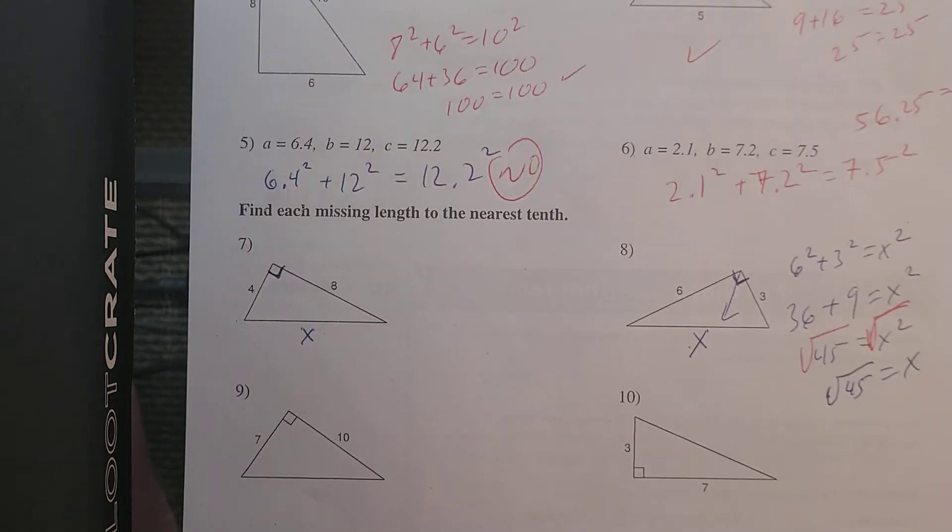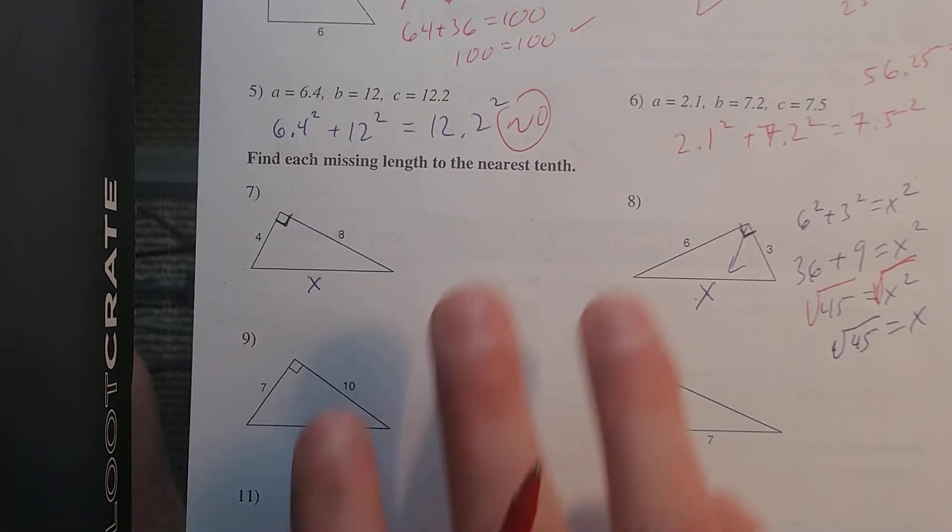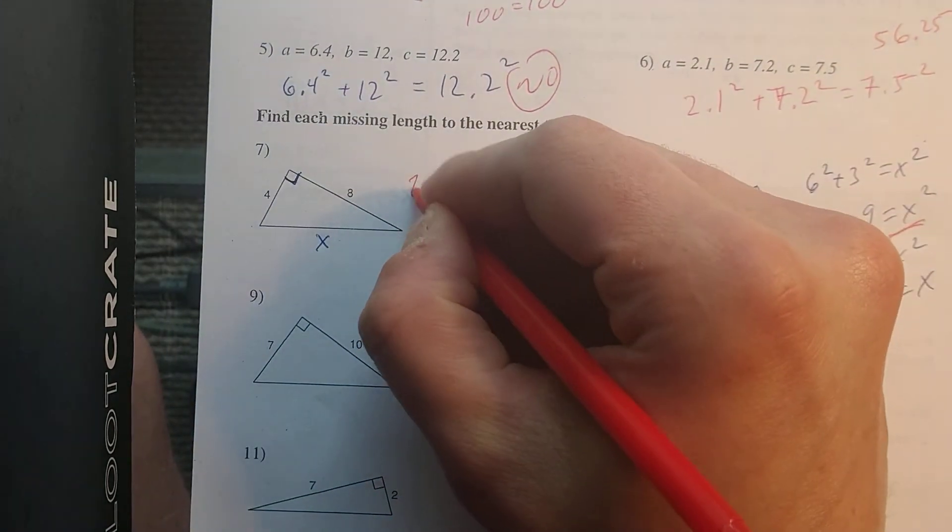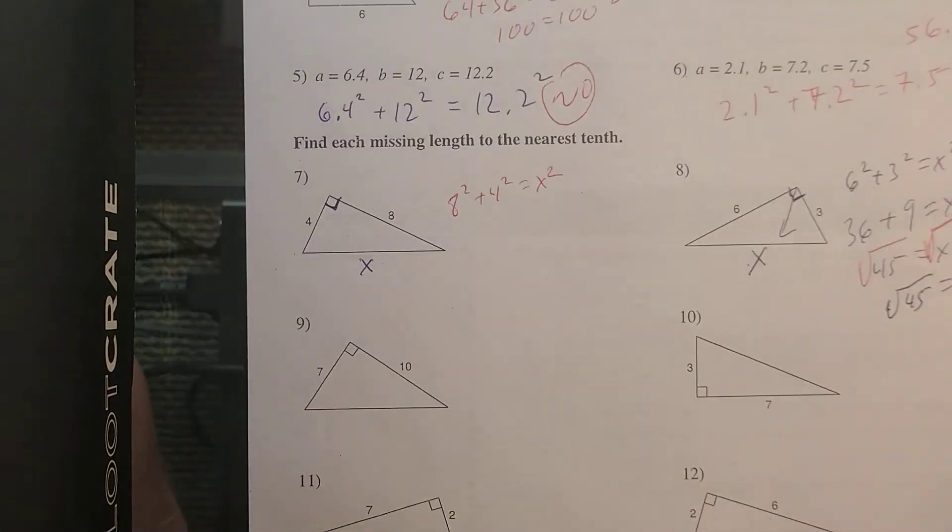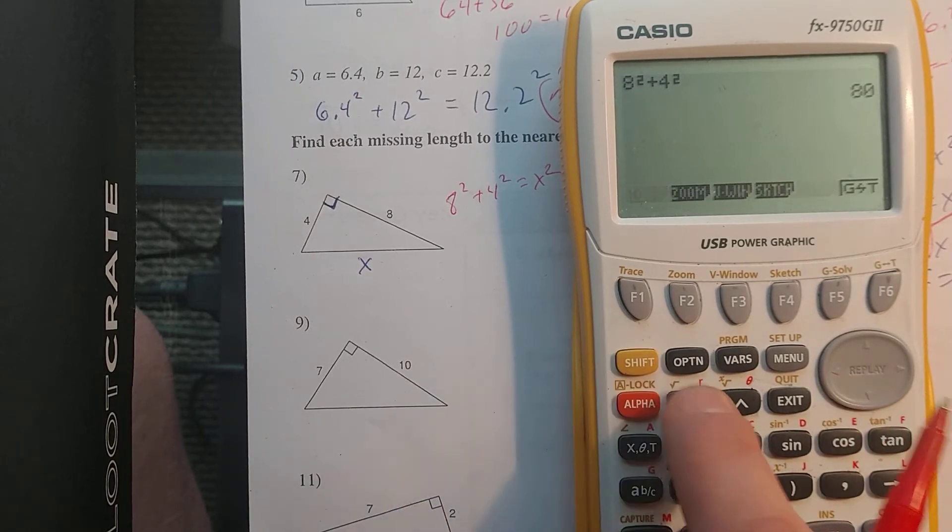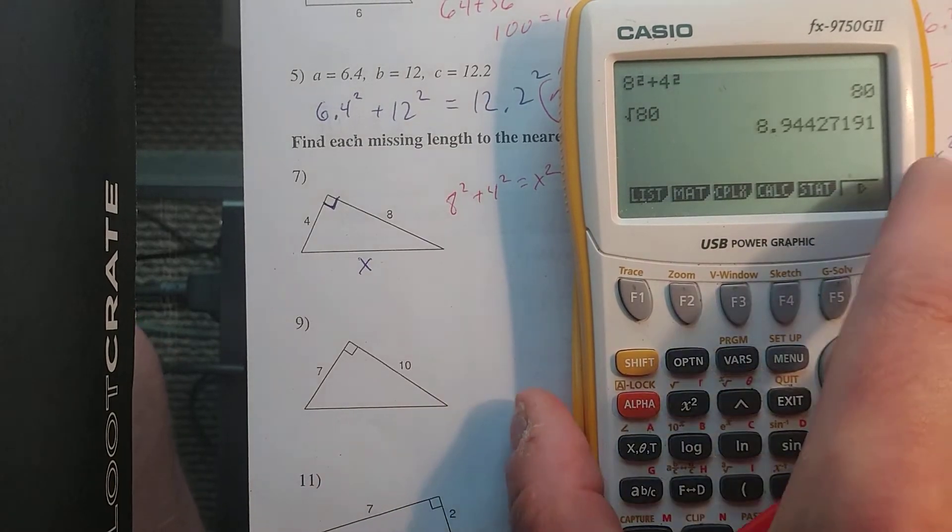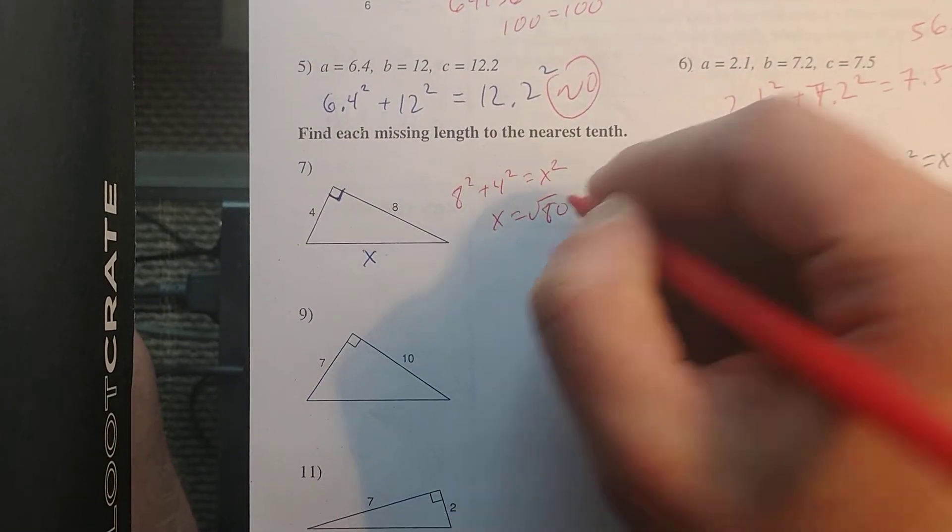So down here we're supposed to find the missing links. The setup for number seven should have been 8² + 4² = X². And when I put that in my calculator I get 80, and the square root of 80 is 8.9. So X is the square root of 80.